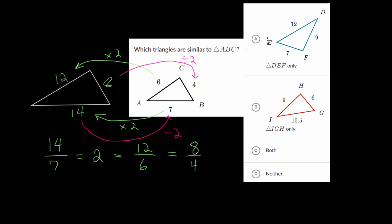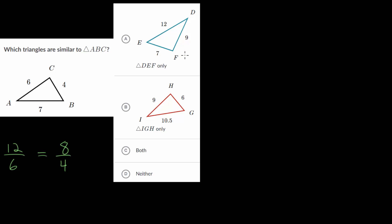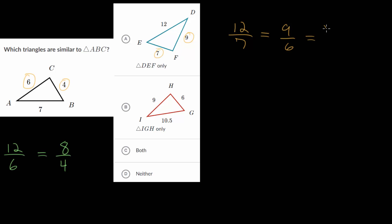We can use this idea to figure out if two triangles are similar to triangle ABC. Let's start by looking at option A and comparing the side lengths. We compare the long side of the smaller triangle to the long side of the bigger one and check if the ratio is consistent across all corresponding sides. So DE has length 12 compared to AB which is 7, the middle sides are 9 and 6, and the smaller sides would be 7 to 4.